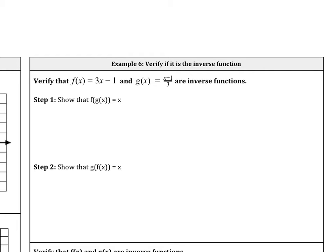Example 6: we want to look at whether functions are inverses of each other — we want to verify if they're inverse functions. In order to verify, what must be true is that f(g(x)) has to equal x, and g(f(x)) has to equal x. We're starting to look at what's called a composition of functions. Another notation you may see is f∘g of x.